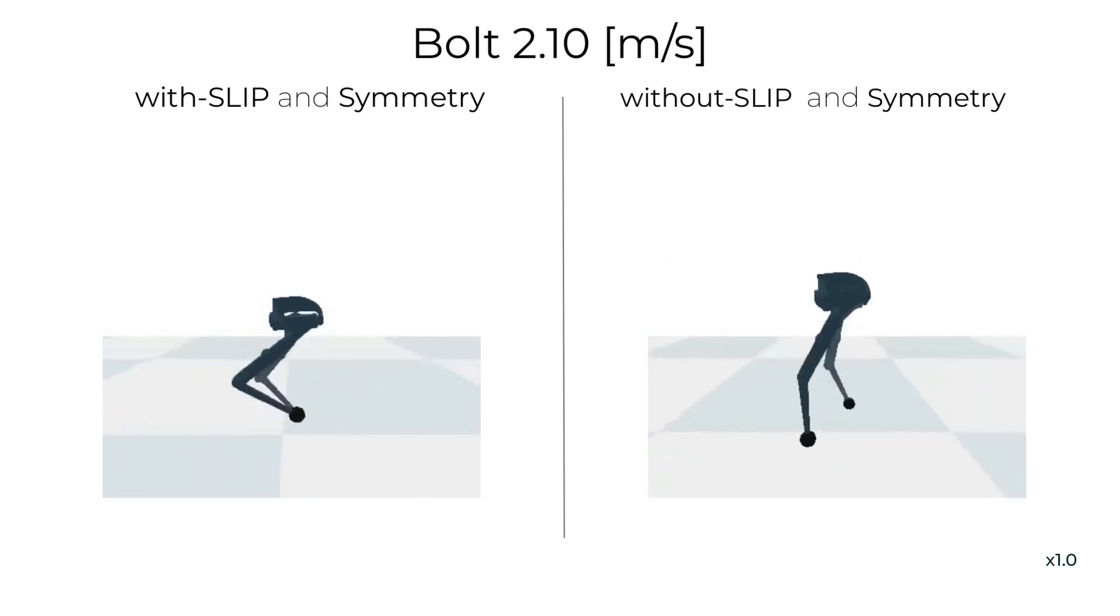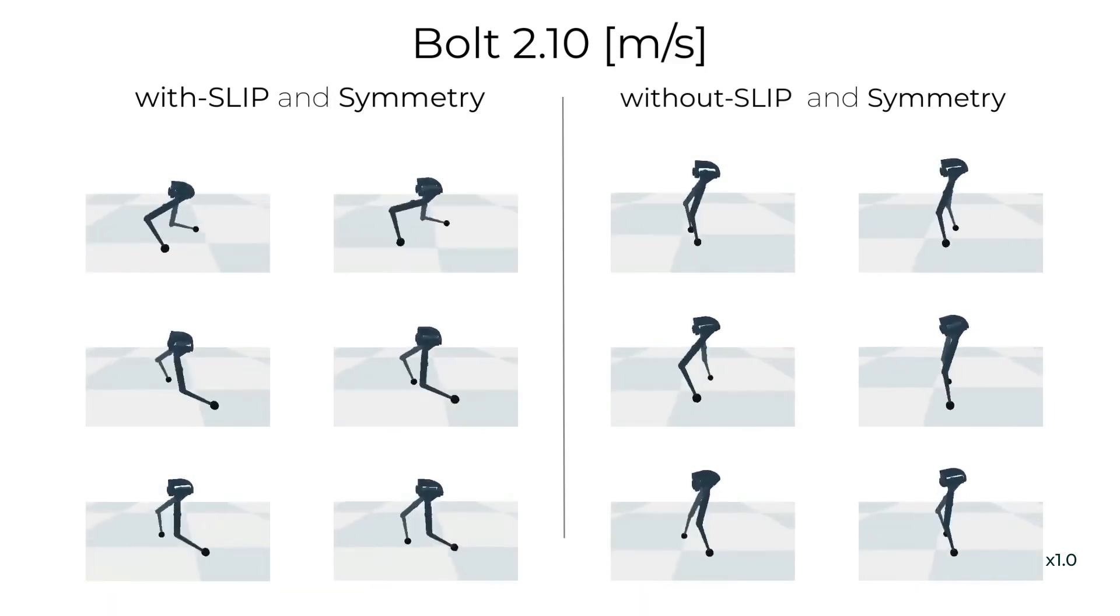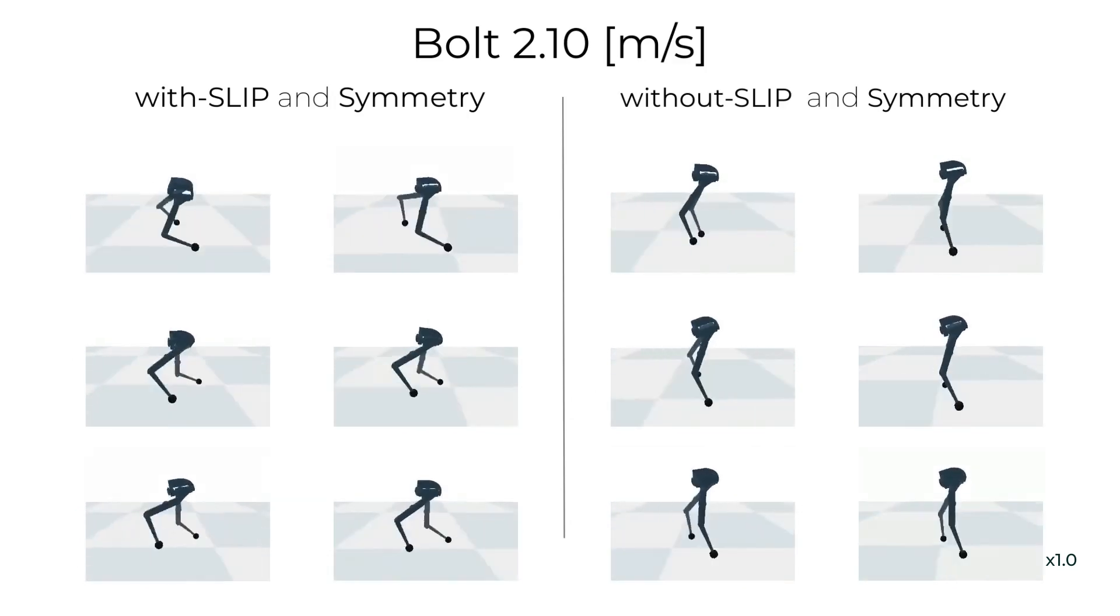The results showed that only when using both the reference dynamics and the symmetry of the environment, the controller converged to periodic energy-efficient gaits. We also observed a considerable increase in performance and reduction of variance across different training seeds.